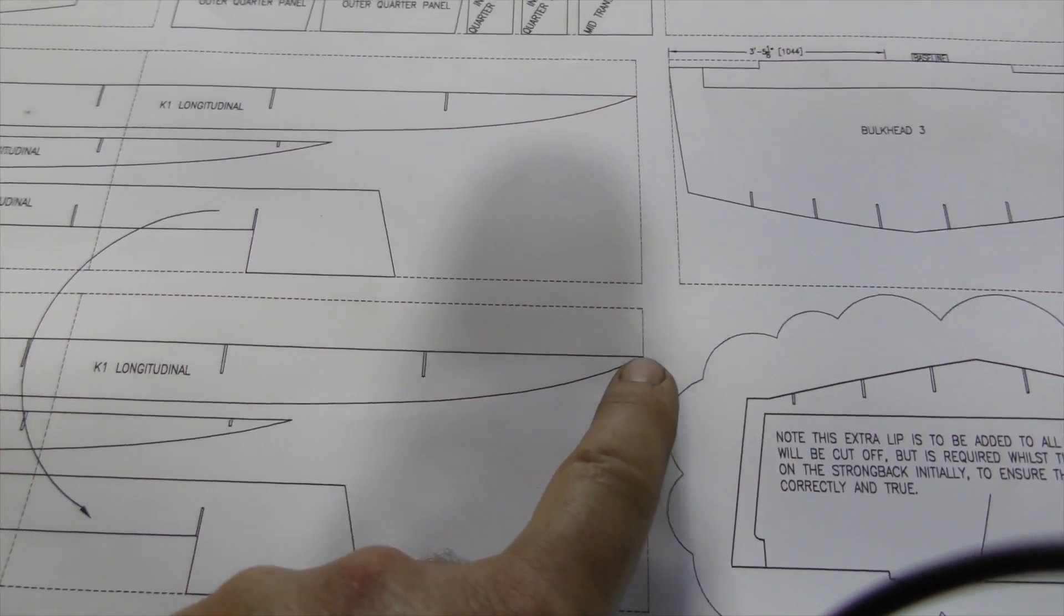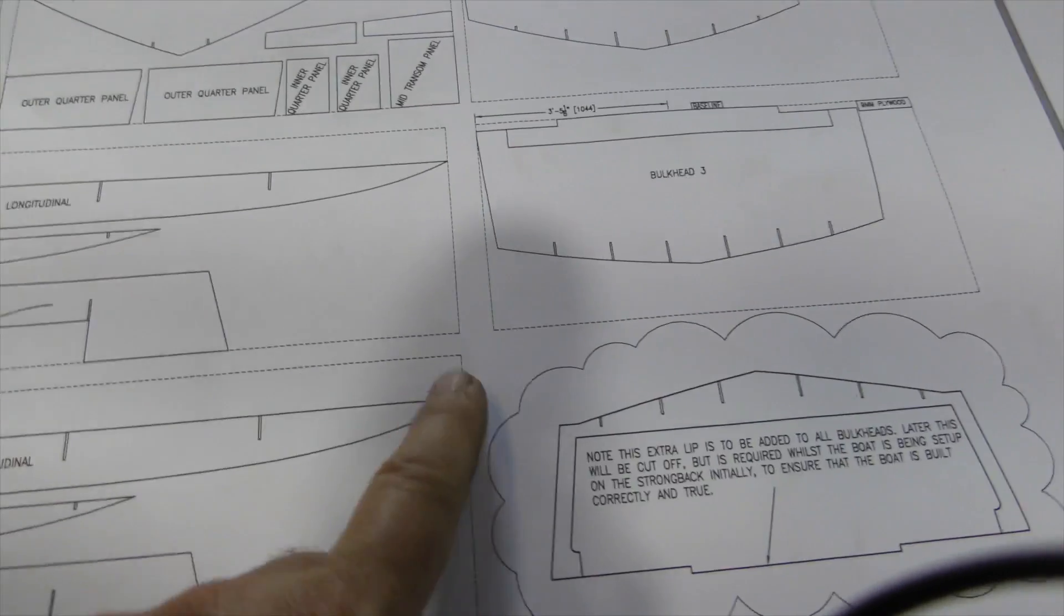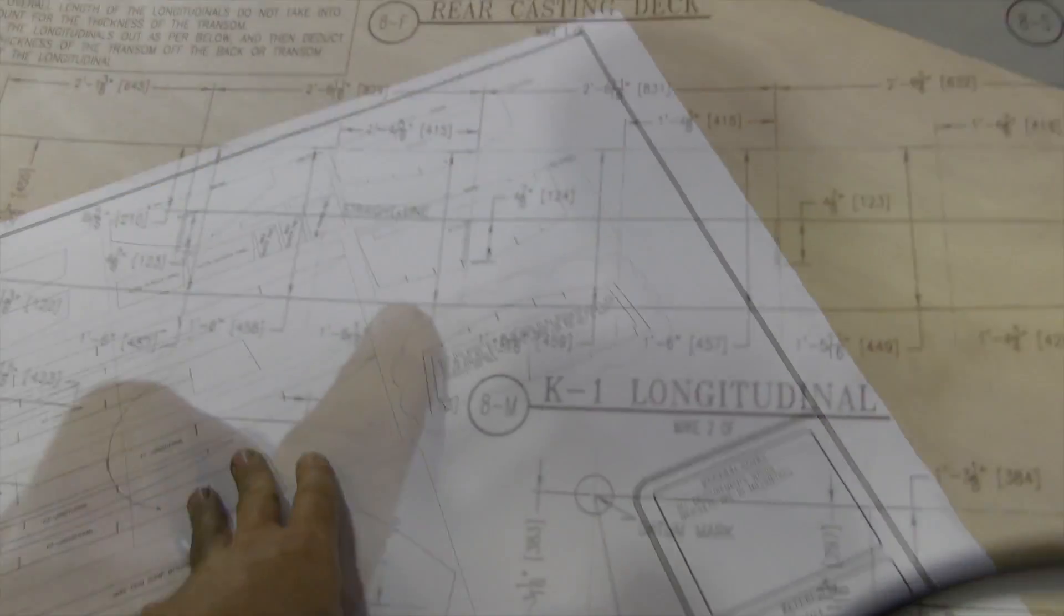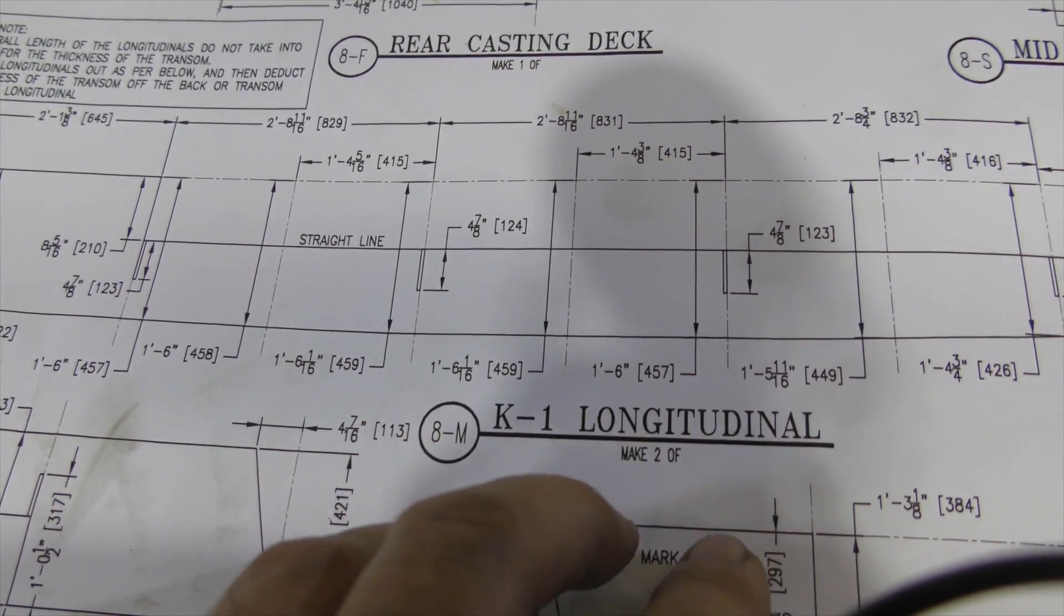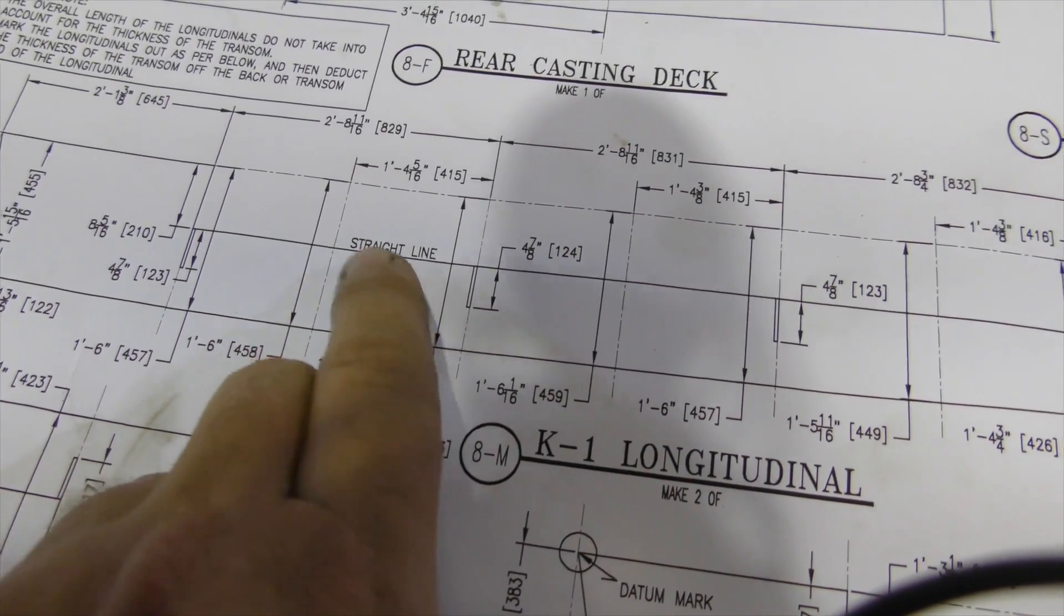You can see here that this line actually extends across this entire piece of ply, so really I can just mark one edge, mark the other edge, draw that straight line, and we're done with that line. And in case you're ever wondering whether it's a really gentle curve or a straight line, the plans will tell you, so there's no doubt.